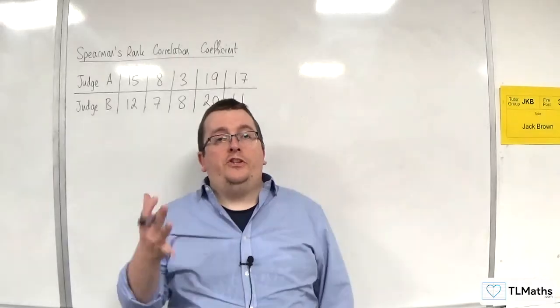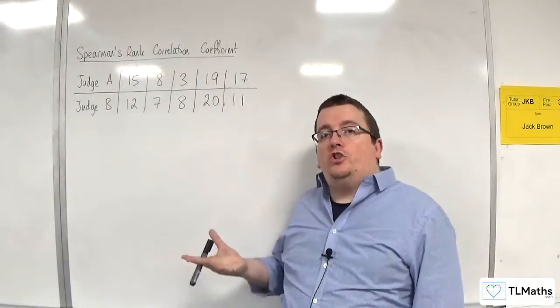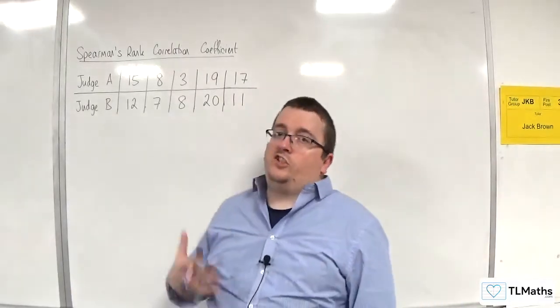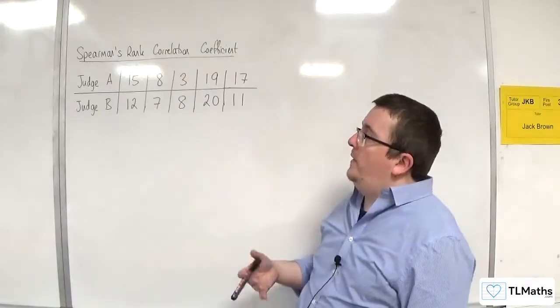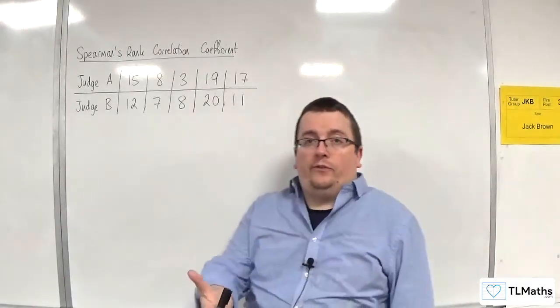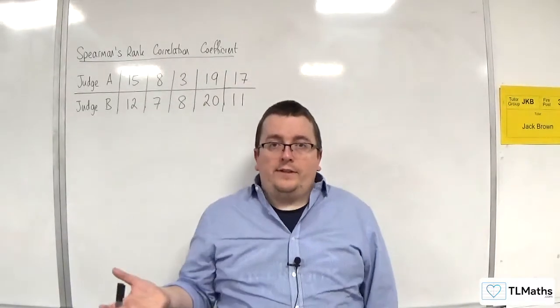So let's say we have two judges, Judge A and Judge B, and they're judging a talent contest. They're going to give their contestants scores out of 20. Let's say there are only five contestants, and these are the scores they've given them out of 20, judging the talent contest.